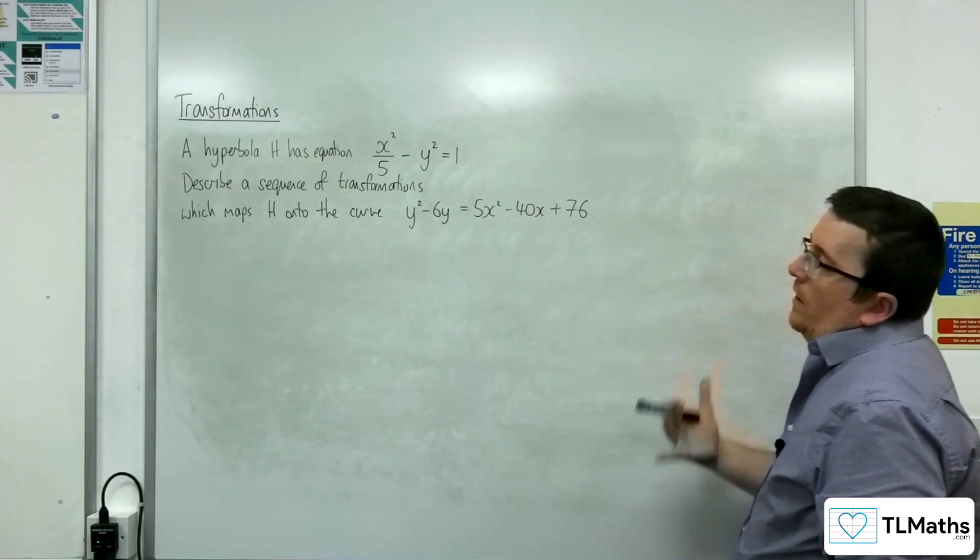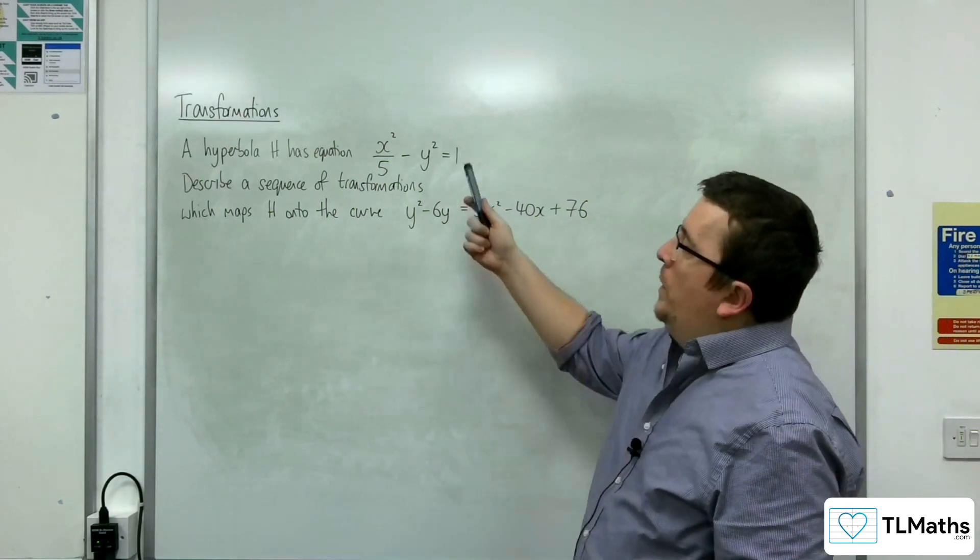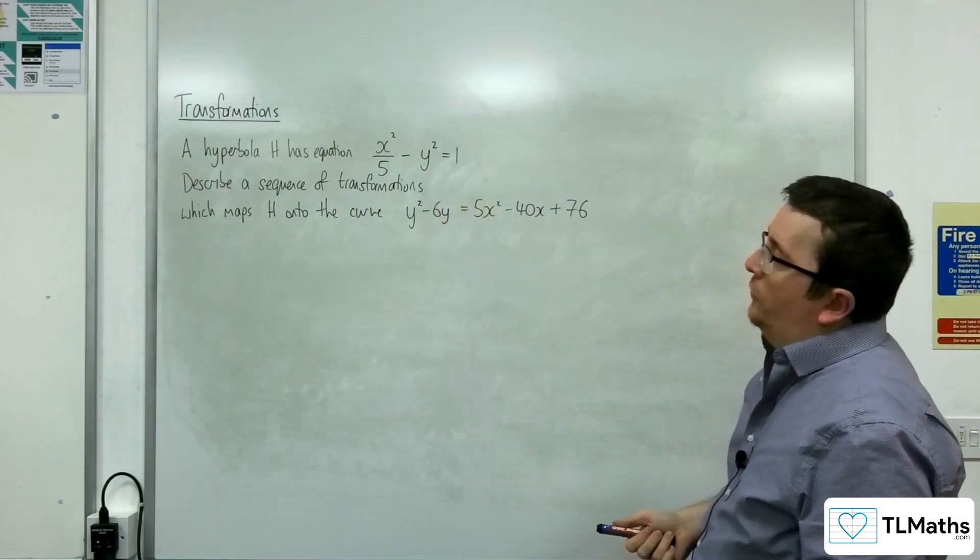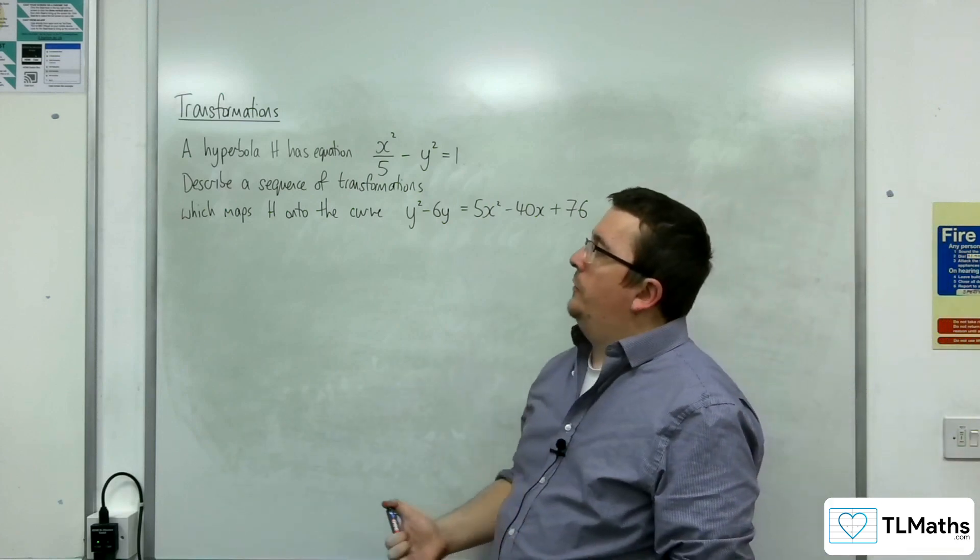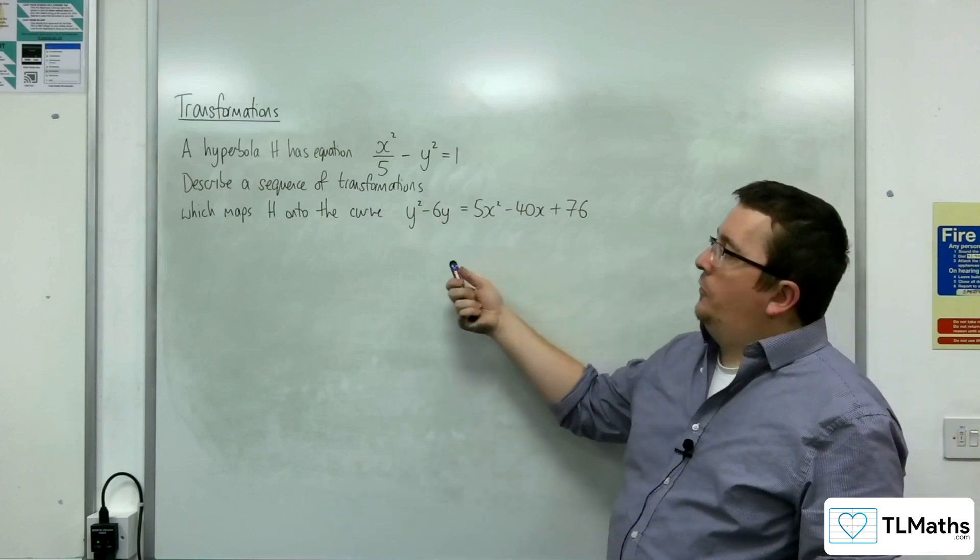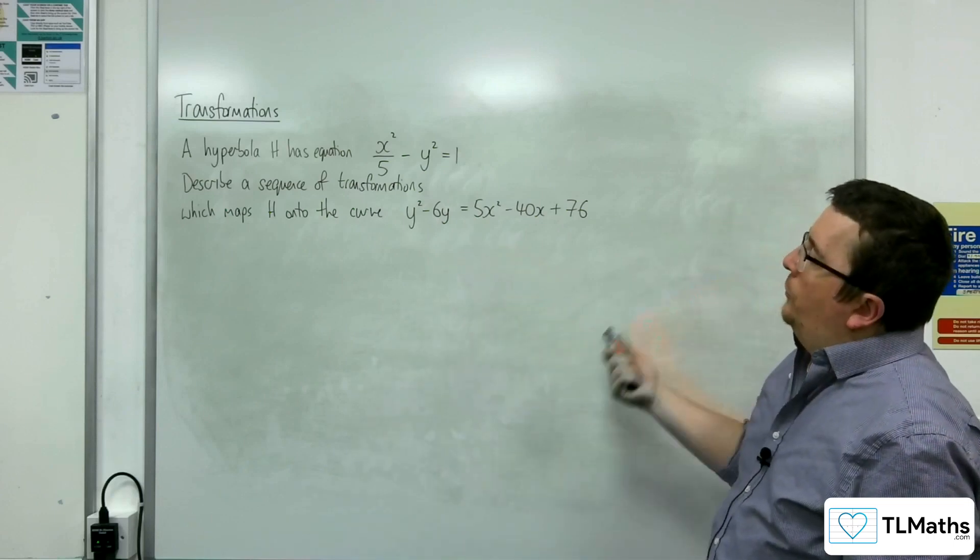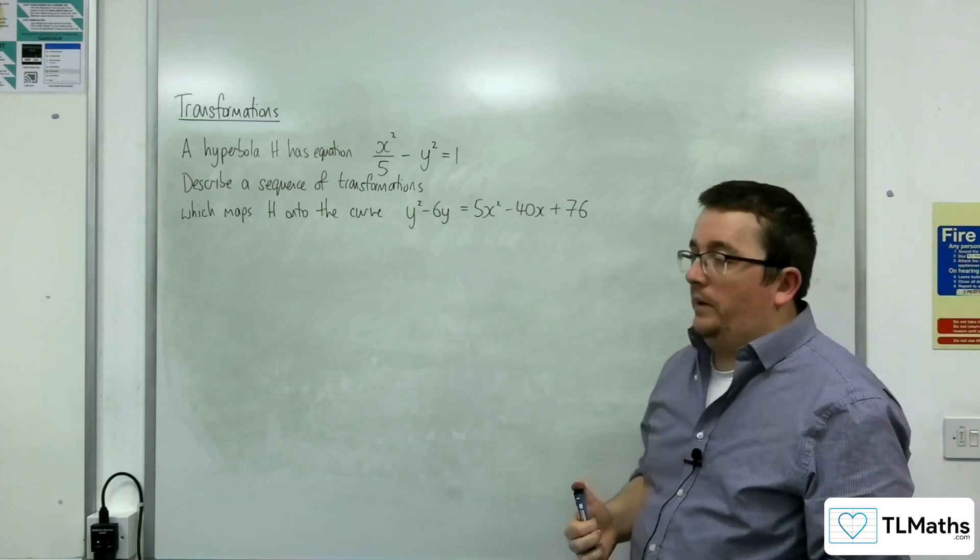In this video, we have a hyperbola h having equation x squared over 5 take away y squared equals 1. Describe a sequence of transformations which maps h onto the curve y squared take away 6y equals 5x squared take away 40x plus 76.